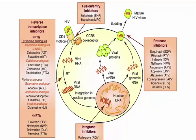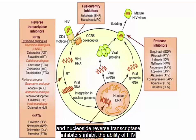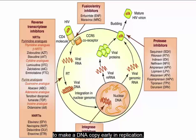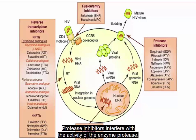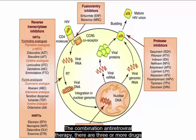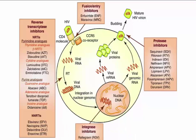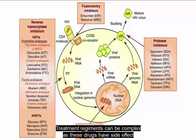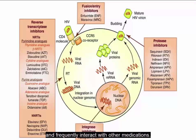Regarding medications: the nucleoside, non-nucleoside, and nucleotide reverse transcriptase inhibitors inhibit the ability of HIV to make a DNA copy early in replication. Protease inhibitors interfere with the activity of the enzyme protease. Fusion inhibitors interfere with HIV CD4 receptor site binding and entry into cells. For combination antiretroviral therapy, three or more drugs from different groups are prescribed at full strength. Treatment regimens can be complex as these drugs have side effects and frequently interact with other medications.